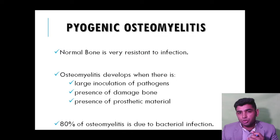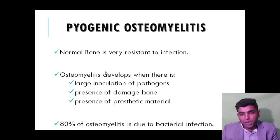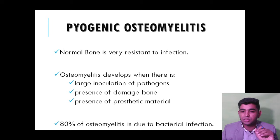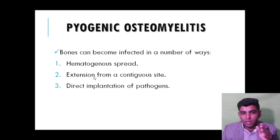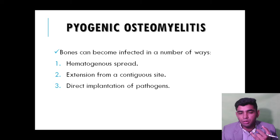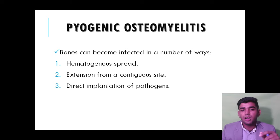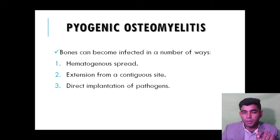Pyogenic osteomyelitis means pus-producing. Osteomyelitis develops when there is a large inoculation of the pathogen, presence of damaged bone, or presence of prosthetic material. It may arise due to hematogenous spread, extension from an adjacent cartilage site, or direct implantation of pathogens.